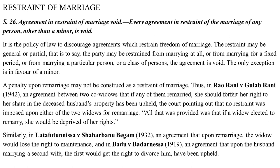The next section is Section 26 on restraint of marriage. Every agreement in restraint of the marriage of any person other than a minor is void. It is the policy of law to discourage agreements which restrain freedom of marriage. The restraint may be general or partial — the party may be restrained from marrying at all, from marrying for a fixed period, or from marrying a particular person or class of persons. The only exception is in favor of a minor.